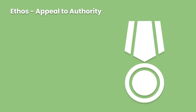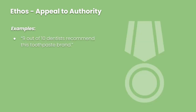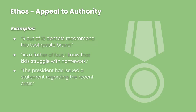Here are some quick examples of ethos. 'Nine out of ten dentists recommend this toothpaste brand' — the authority is a sample group of dentists. 'As a father of four, I know that kids struggle with homework' — you're appealing to your own authority as a parent with firsthand experience. 'The president has issued a statement regarding the recent crisis' — the authority is the president. We wouldn't be as intrigued if Bob from down the street had issued the same statement.